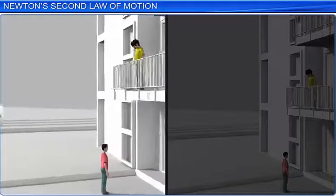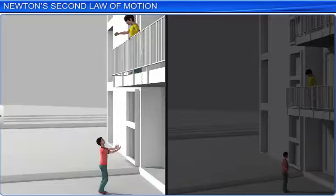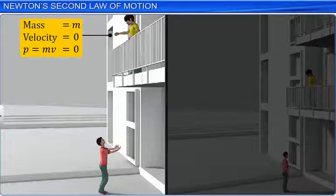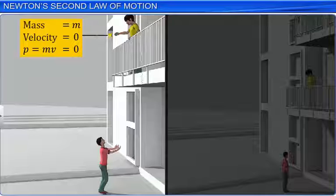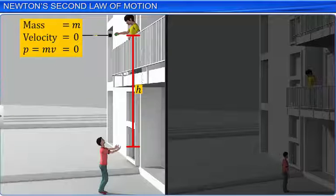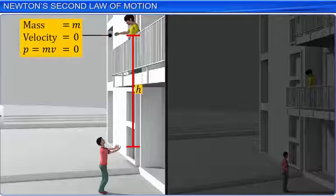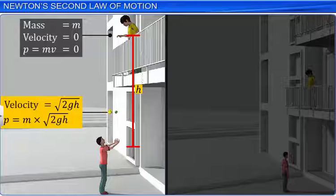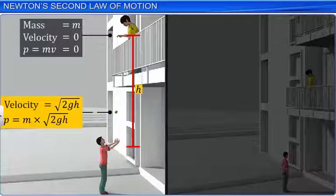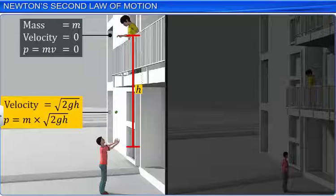A boy standing in a first floor balcony drops a ball of mass M from a certain height H. As the ball goes down, it gains some velocity and hence acquires a certain momentum.